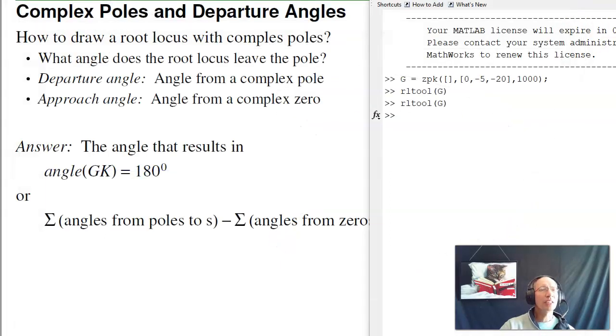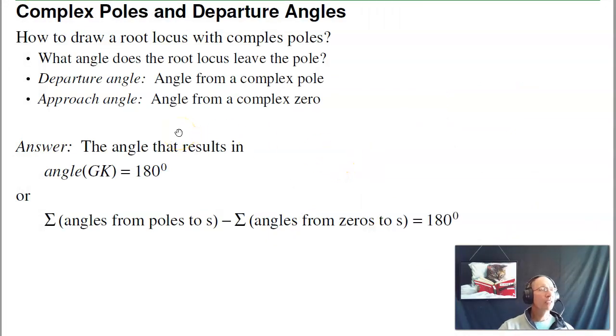Let's see if we can calculate that. To calculate it, any point on the root locus, the angles add up to 180 degrees. So the approach angle is what angle makes it add up to 180.